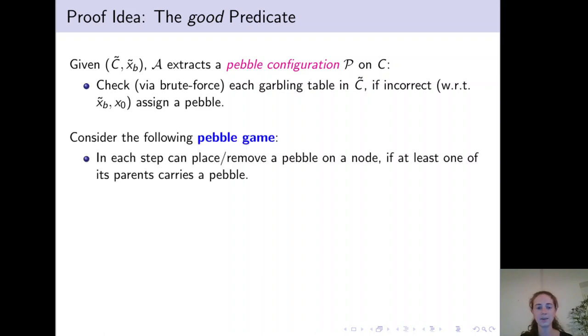We then consider a pebbling game, where in each step one can place or remove a pebble on a node if at least one of its parents carries a pebble. To get an intuition on this pebbling game, consider for example the following pyramid graph and assume we want to pebble the sink of this graph.